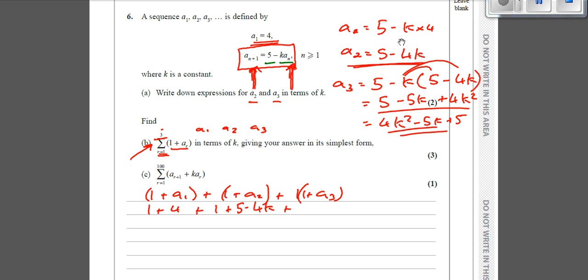Plus this one, which was 1 plus a3, which we said was this one here. So plus 4k squared minus 5k plus 5. That's pretty much it. And then you've just got to simplify it.